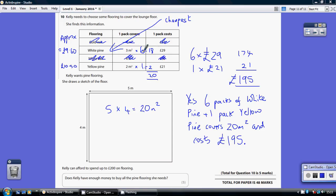That's going to be, I'm going to have to buy six packs of this at £29 each. Six times 29 is £174. So that's how much I've spent by buying six packs of the white pine. Now that's only given me 18 metres squared.